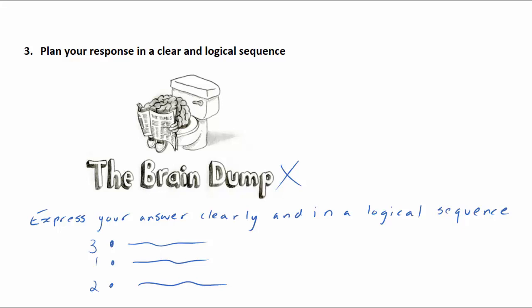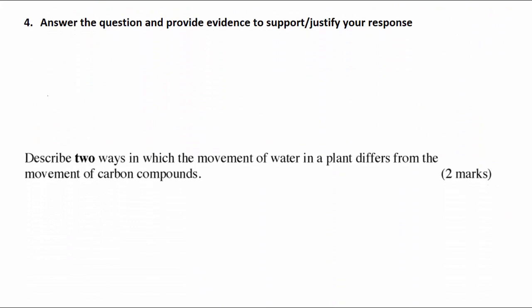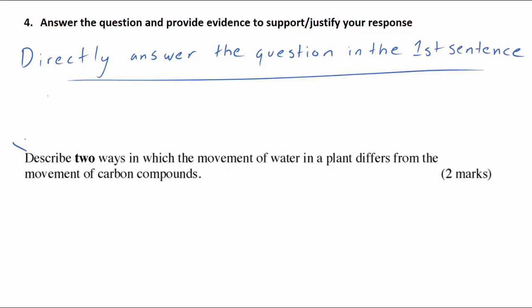Keep in mind that short response science questions are not English essays. You do not have to write an introductory paragraph and then build your arguments towards a conclusion. Often, it is most effective to directly answer the question in your first sentence. Don't repeat or reword the question at the start of your answer. For example, question one: Describe two ways in which the movement of water in a plant differs from the movement of carbon compounds. You're wasting valuable space that you could use to demonstrate your understanding. This is often where students will stop their response to a question. You may think I've answered this question directly and that's all I need to do.